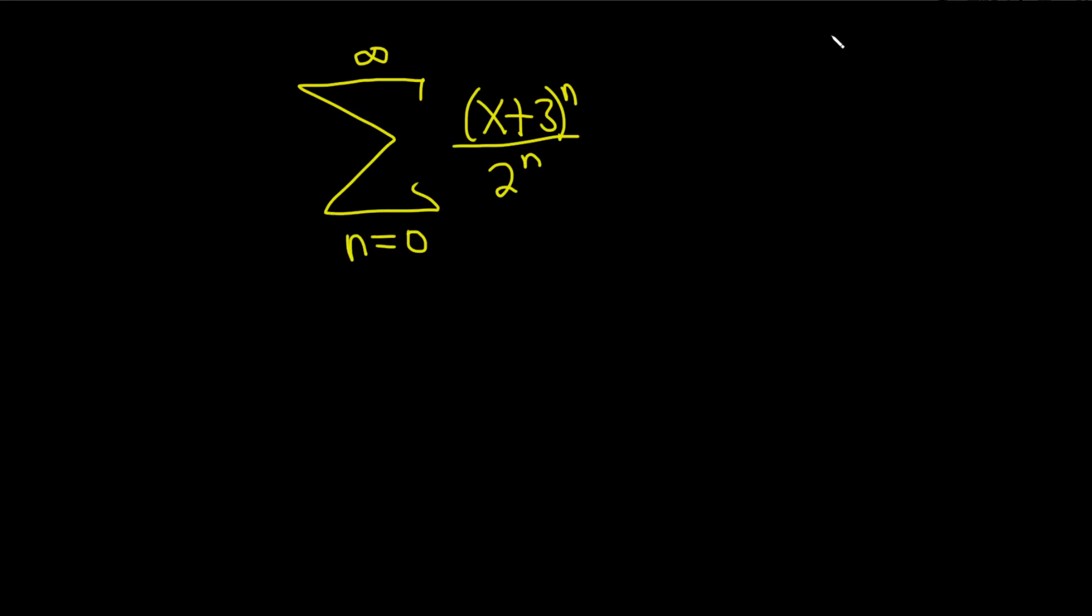To do that, we're going to use something called the geometric series test. So the geometric series test says if you have an infinite sum that is a geometric series, something like a times r to the n, one of two things can happen.